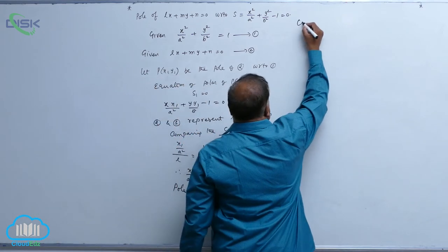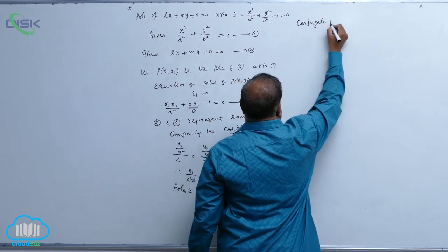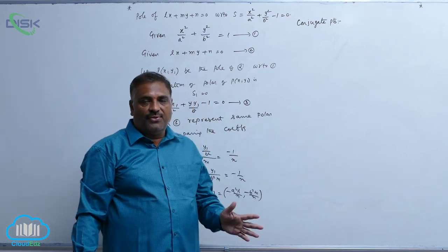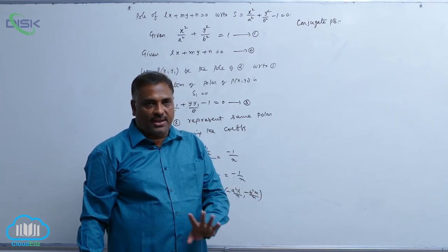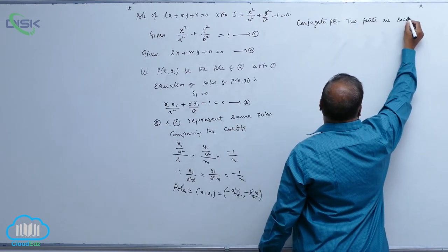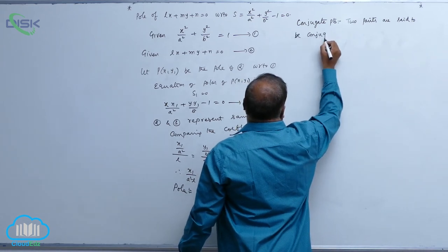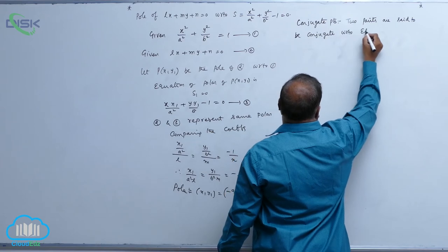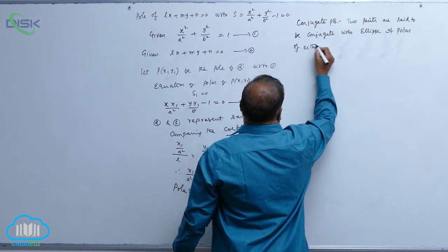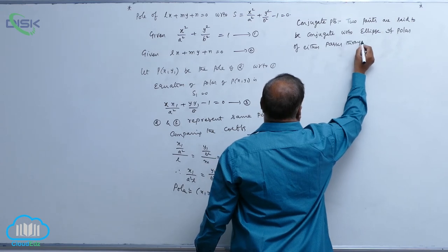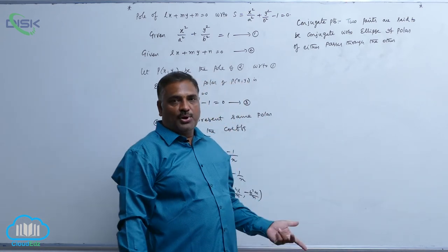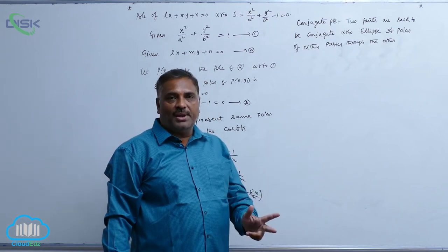Now we have one definition called conjugate points. Two points are said to be conjugate with respect to the ellipse if the polar of either point passes through the other. Let us take the ellipse equation and evaluate the condition for two points to be conjugate.